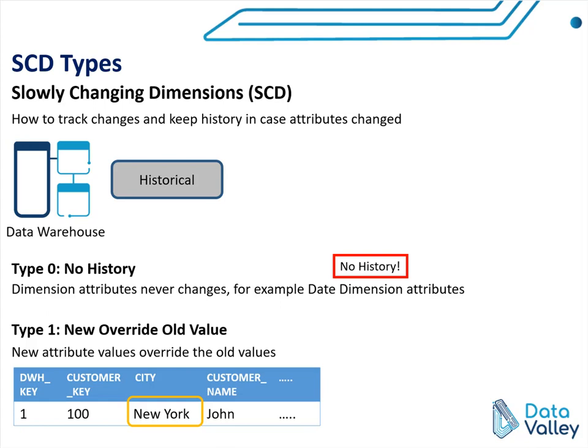So if the city has changed in the source system — the customer changed their resident city — in our dimension table we will just remove the old value and put the new value. We don't keep history; we don't track the old value. If the customer changes their city again, we remove the old value and keep the new value.